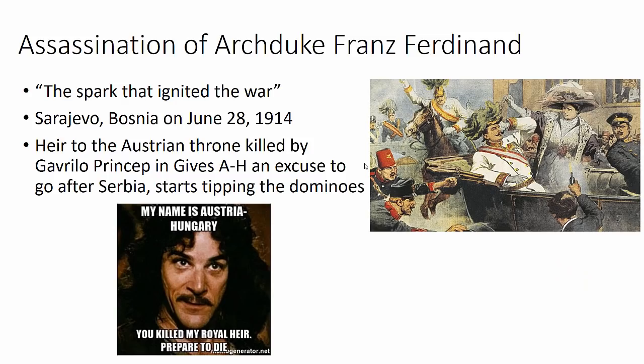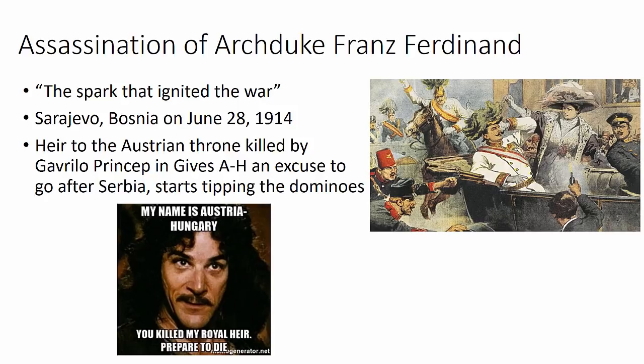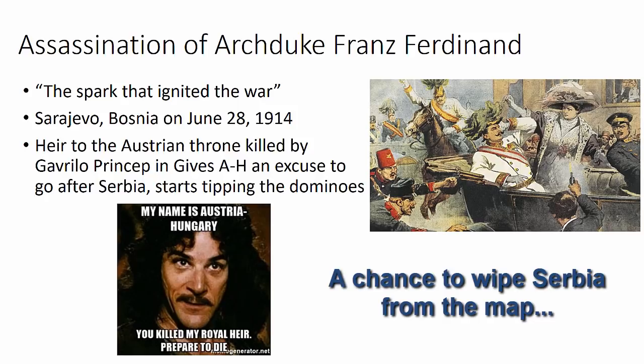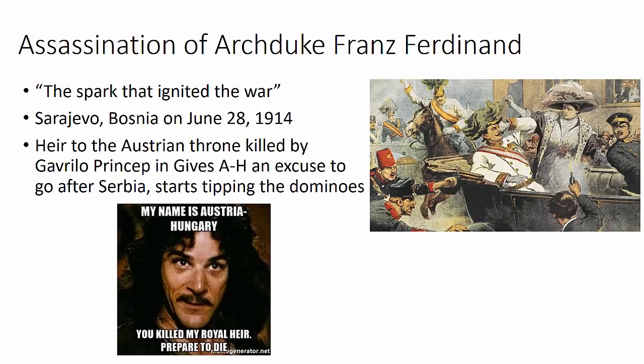The spark that ignited the war was the assassination of Archduke Franz Ferdinand. This happened in Sarajevo, Bosnia on June 28, 1914. He was the heir to the Austrian throne, and this gave the Austrians a reason to go to war with Serbia — something they had long sought. This was a chance to wipe Serbia from the map. Once Austria-Hungary goes after Serbia, the dominoes start to tip over, other countries get involved due to the system of alliances, and the rest, as they say, is history.